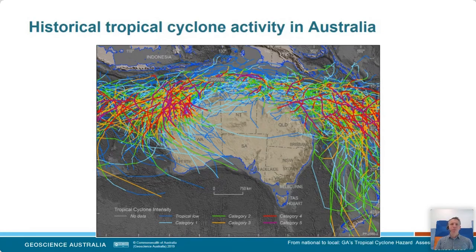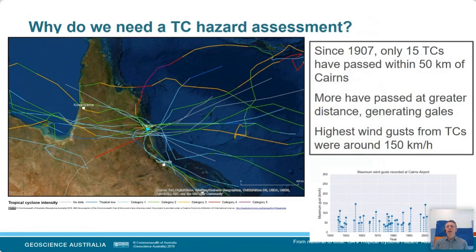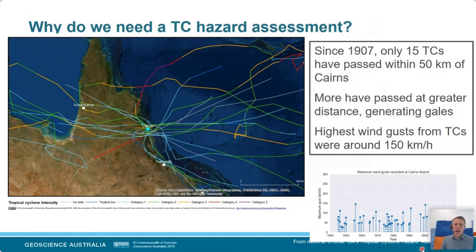A case in point: when we zoom into Cairns in the far north of Queensland, and look at the full historical record dating back to 1907, there are only 15 cyclones that have passed within 50 kilometres of Cairns. Looking at the digitised record at the weather station there, which opened in 1945, there are about 55 storms that have generated significant winds at the airport. But note that the strongest winds recorded were from Tropical Cyclone Agnes back in 1956, and also Tropical Cyclone Steve around 2000. The maximum recorded wind speed in those events was less than 150 kilometres an hour — merely Category 3 wind speeds.